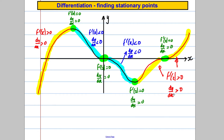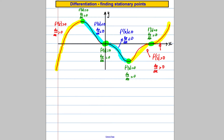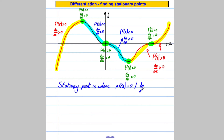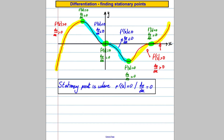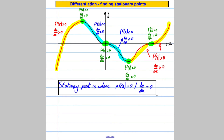The green points are called stationary points. The definition of a stationary point is where f'(x) equals zero, or dy/dx equals zero — i.e., where the gradient is equal to zero. There are one, two, three, four of them on that picture.